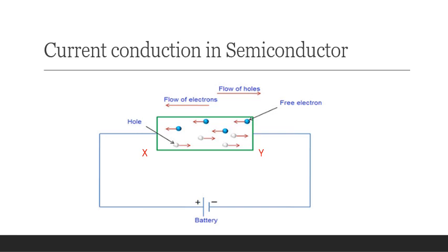Though the current inside the semiconductor is due to free electrons and holes, the current in the external wire is due to electrons only. Holes, being positively charged, move towards the negative terminal of the battery.